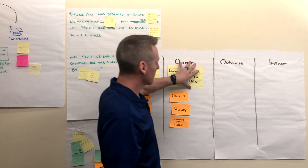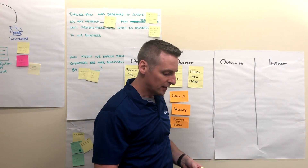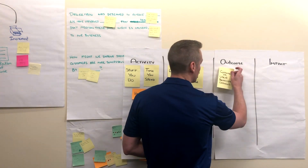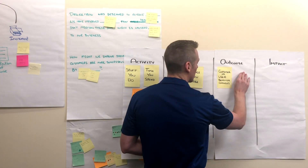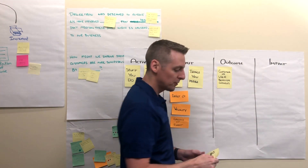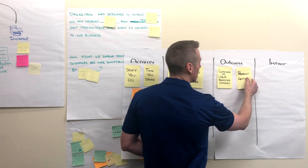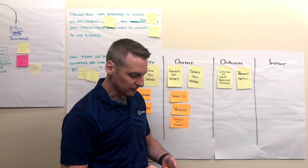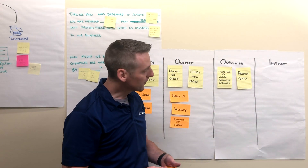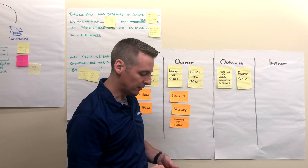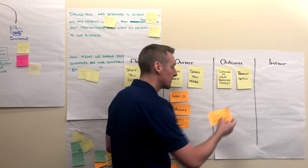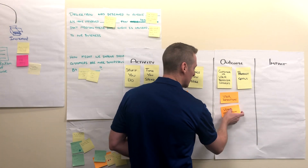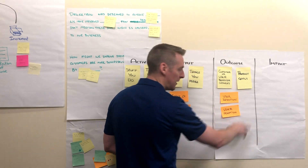Now we're going to start thinking about outcomes. We might think about those as customer or user behavior changes, or changes in our product. Some of the things we might be measuring there would be things like user retention numbers or user adoption numbers.